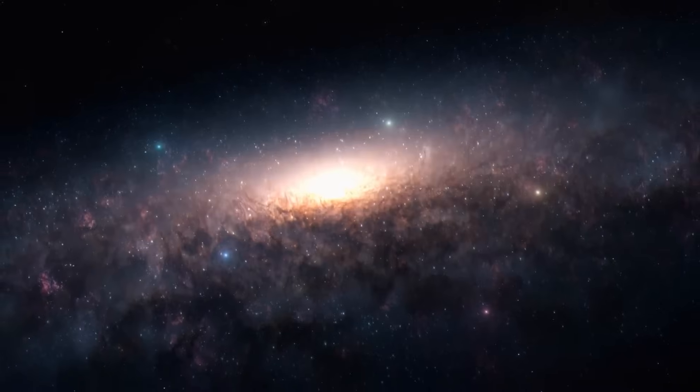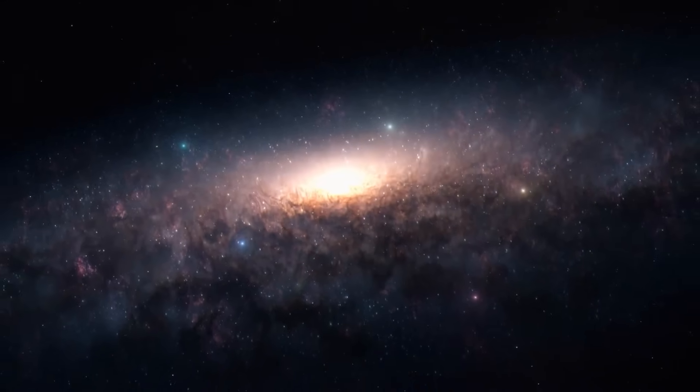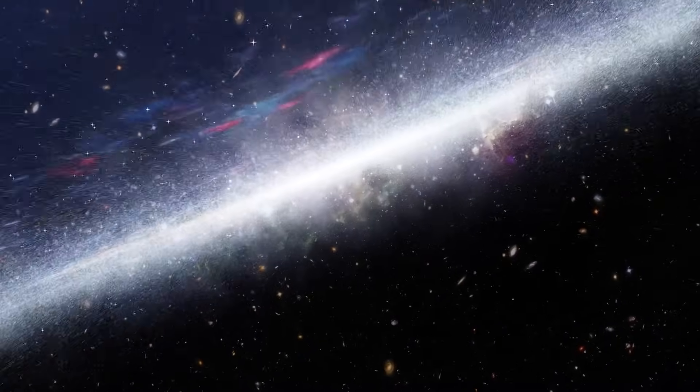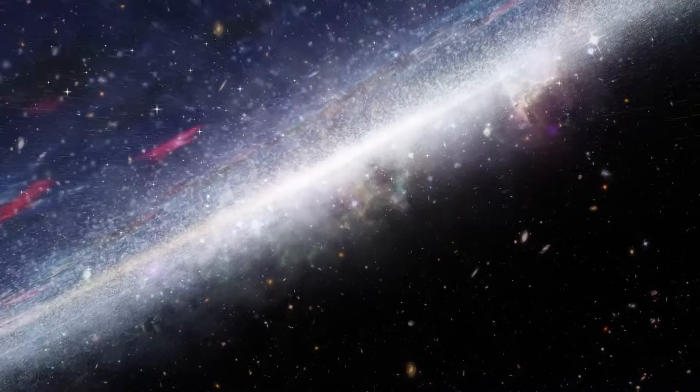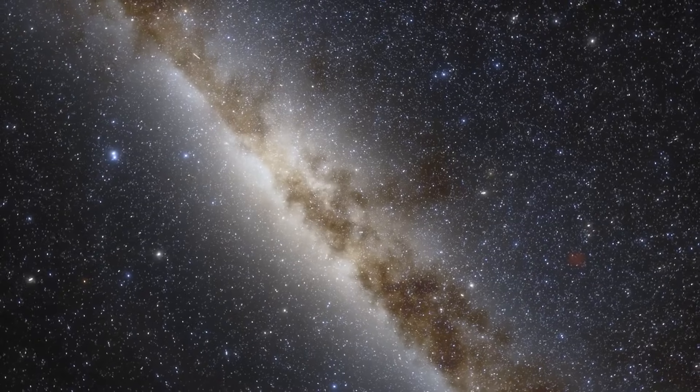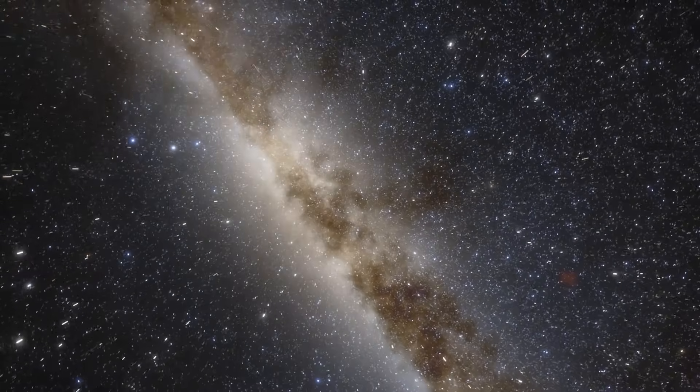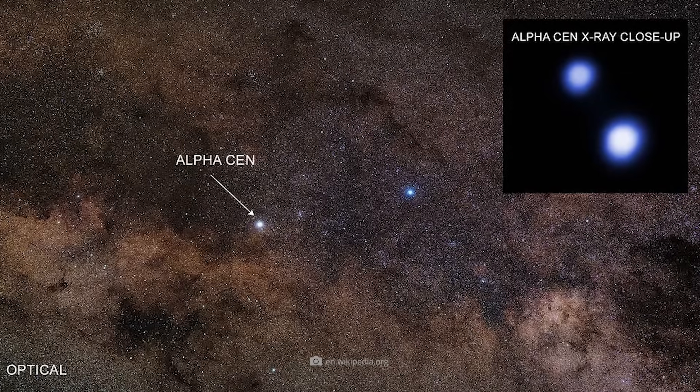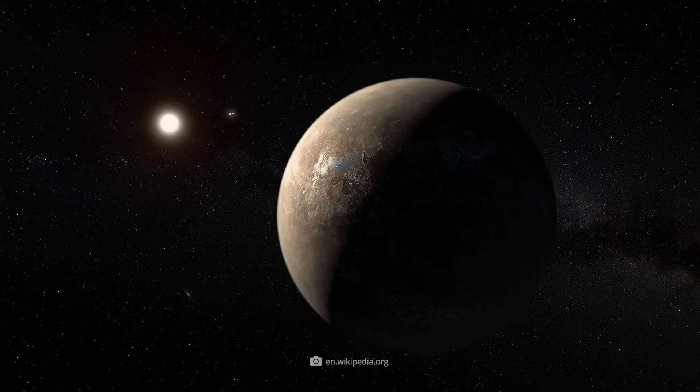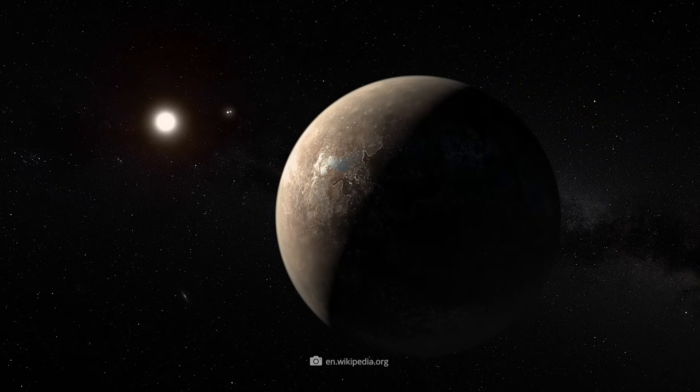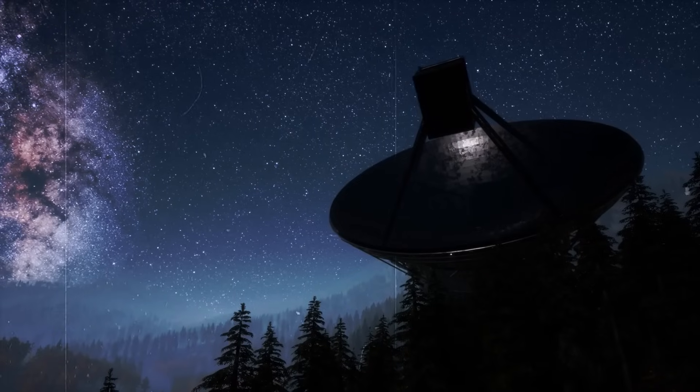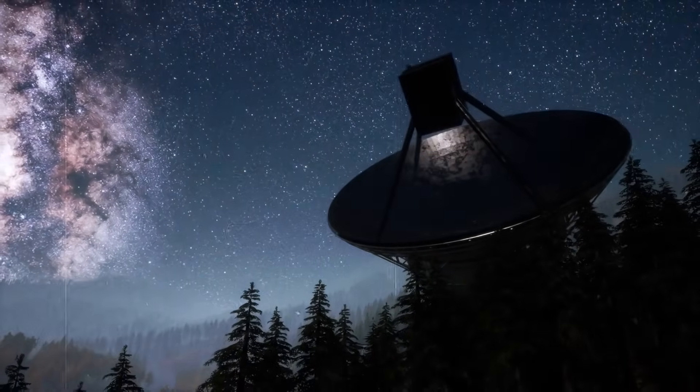We then continue our journey through the local interstellar environment, more precisely through the Orion Arm of the Milky Way, which contains not only our home system but also nearby stars such as Alpha Centauri and Proxima Centauri. And it might actually be worth taking a closer look at this point. After all, the larger Alpha Centauri system, which includes Proxima Centauri b, is home to the closest known exoplanet to Earth. And this is not just any celestial body. It's a world that is excitingly suspected of being habitable.